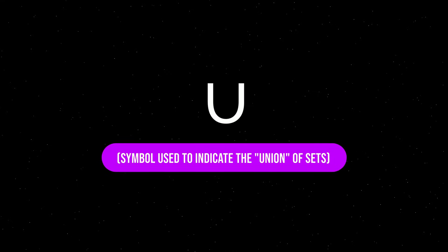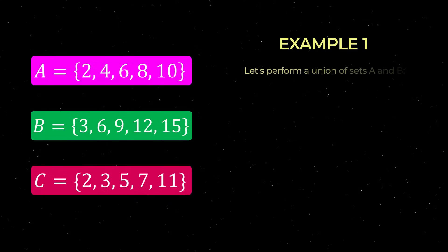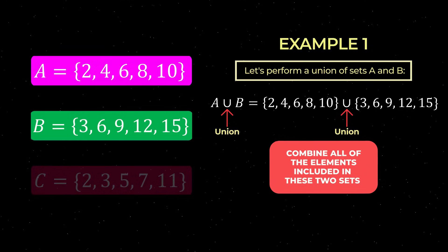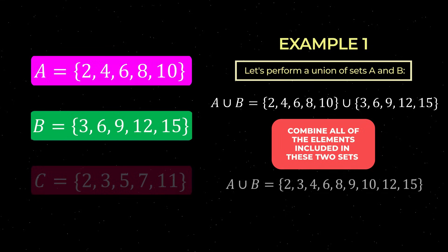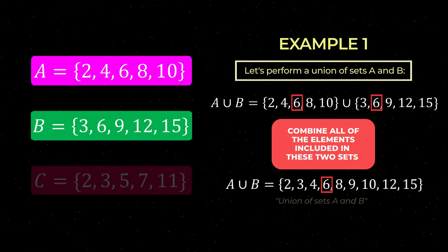As an example, let's return to the number sets that were presented in the previous video and perform a union of sets A and B, indicated as follows. To determine the union of these two sets, we combine all of the elements included in the sets as shown here. Note that we do not repeat elements when we perform a union of sets. Even though sets A and B have the element 6 in common, we do not list this element twice in the union set.